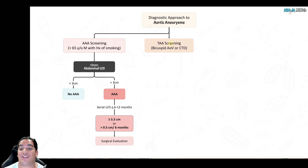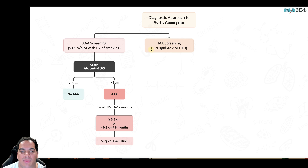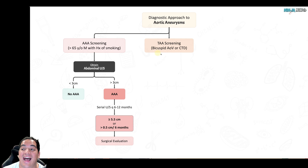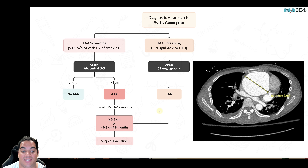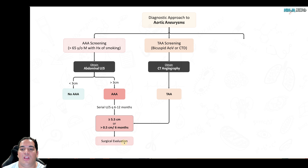TAA screening is less common and is done primarily for patients with a bicuspid aortic valve, Ehlers-Danlos syndrome, or Marfan syndrome, as they are high risk. In these scenarios, get a CT angiogram to evaluate for thoracic aortic aneurysm, monitor it, and contact surgery if it grows or becomes symptomatic.